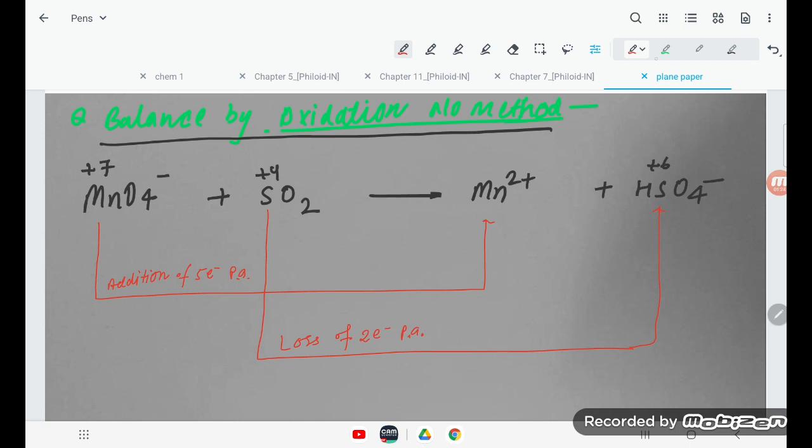Addition of 5 electrons and loss of 2 electrons. If you multiply by 5, it is going to be 10 electrons lost. If you multiply by 2, it is going to be 10 electrons gained.